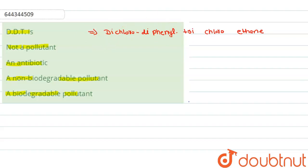Now if we talk about DDT, DDT is used as an insecticide and pesticide. Now talk about whether it is biodegradable or non-biodegradable. So it is non-biodegradable.